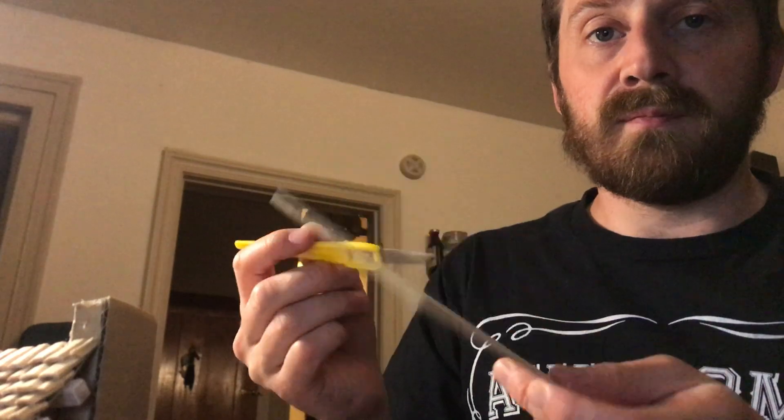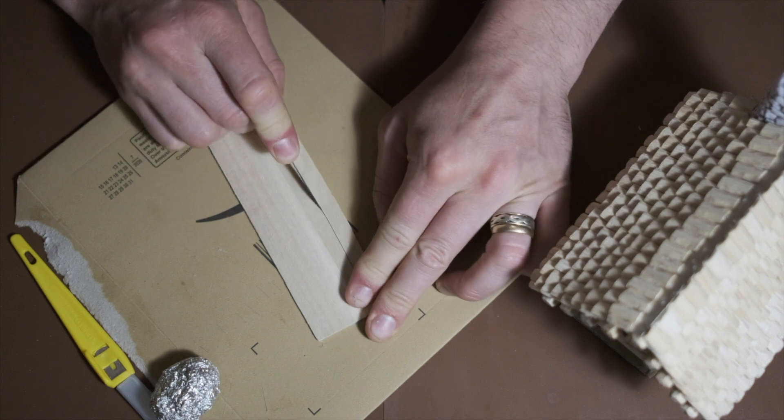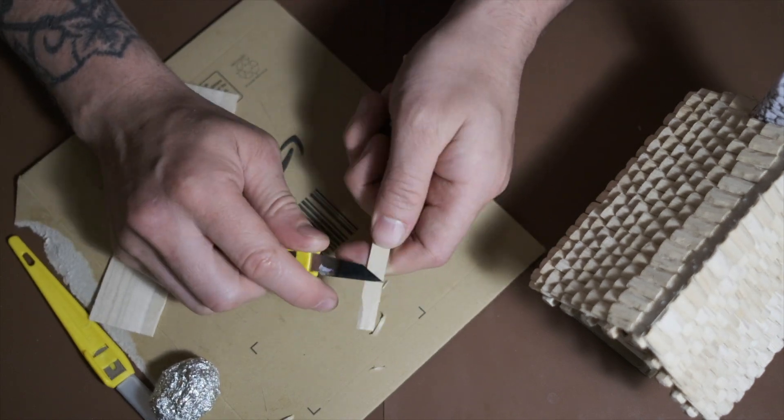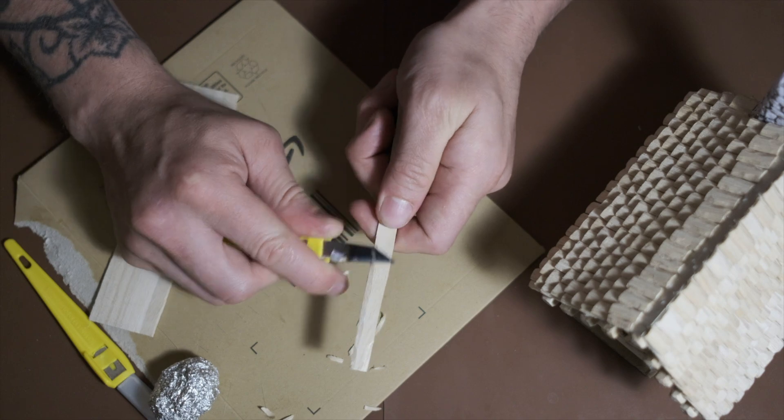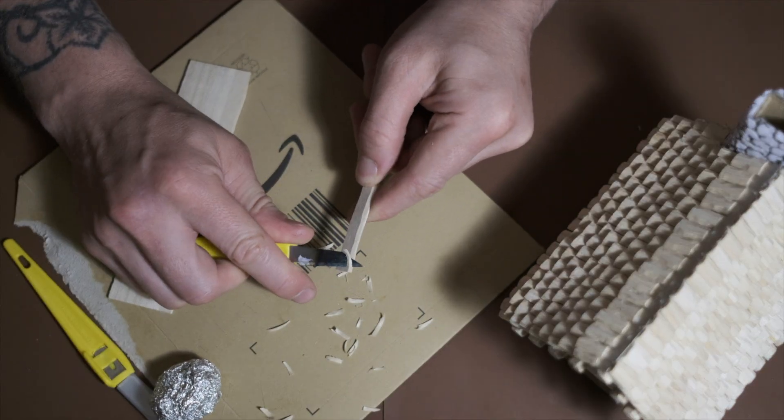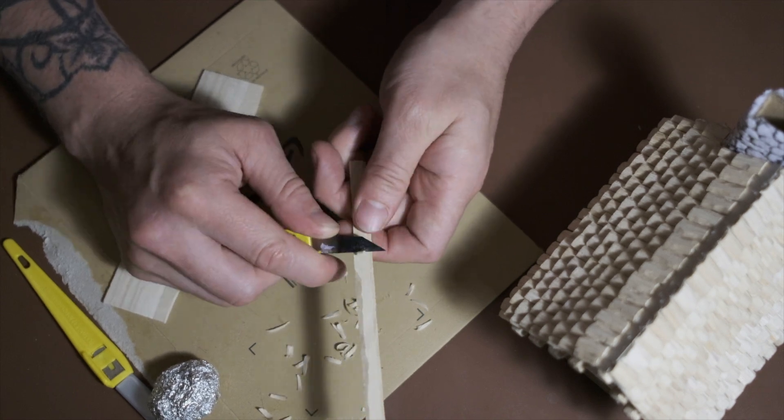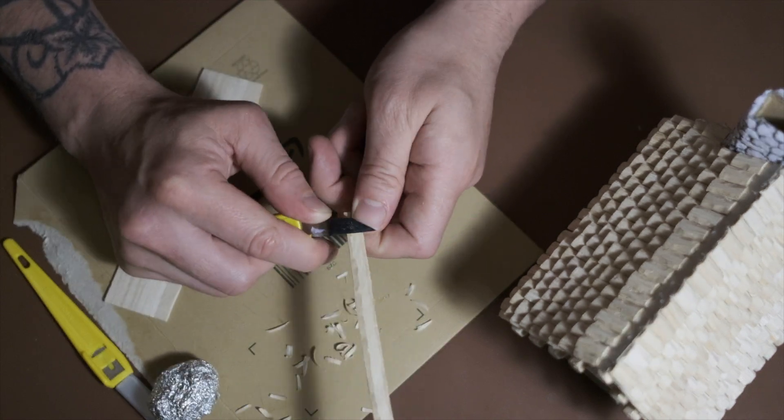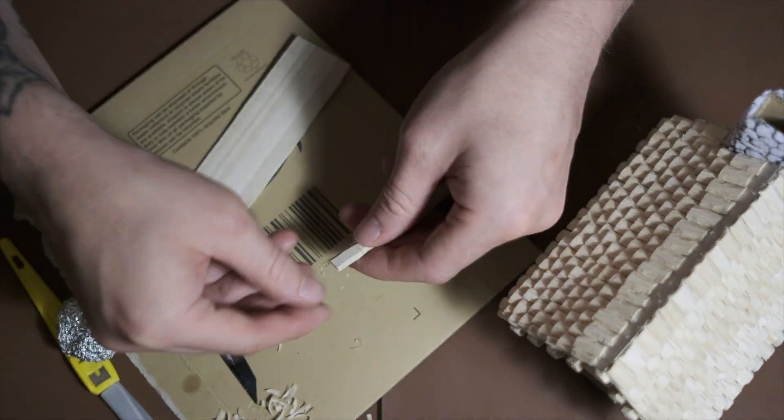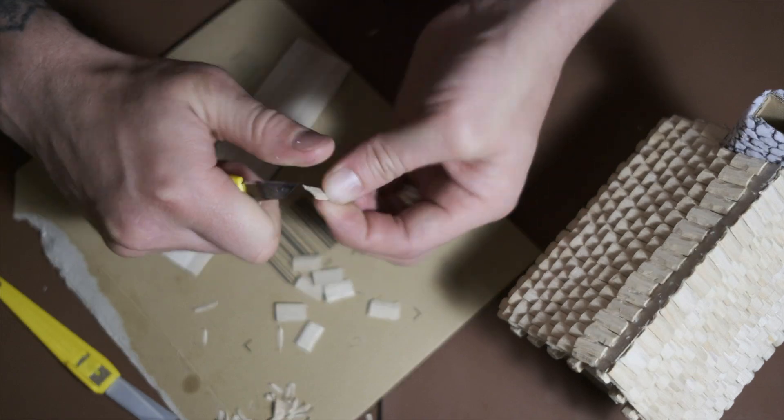The way I've been making the shingles is I've got balsa wood and I've just been cutting them into strips like this, then tapering the edges and giving them a bit more of a not straight cut feel. Then I'm cutting them into little bits like this, little shingles, and I'm gluing them on.